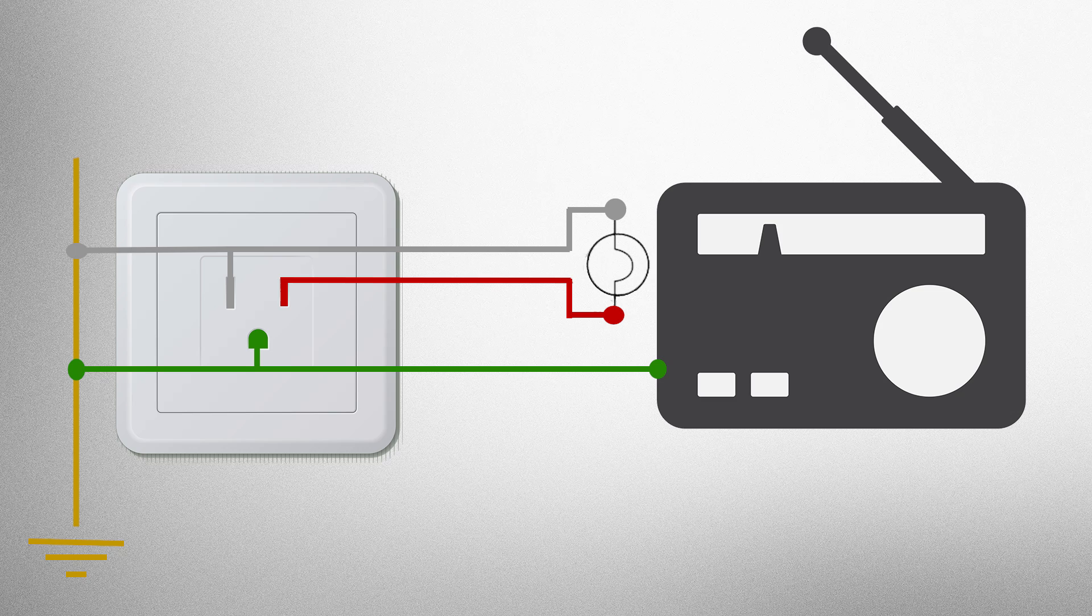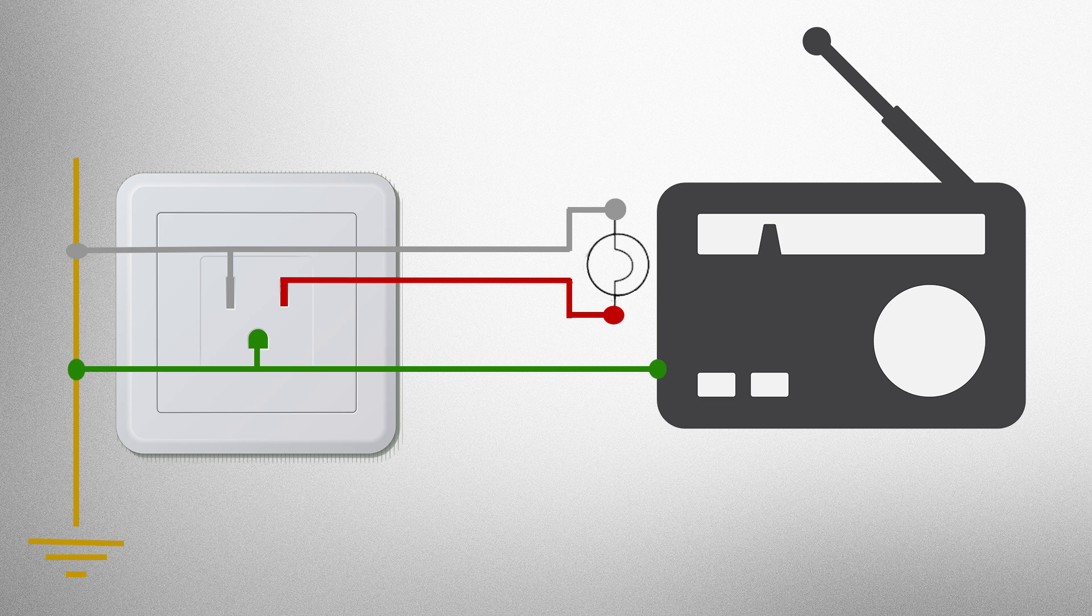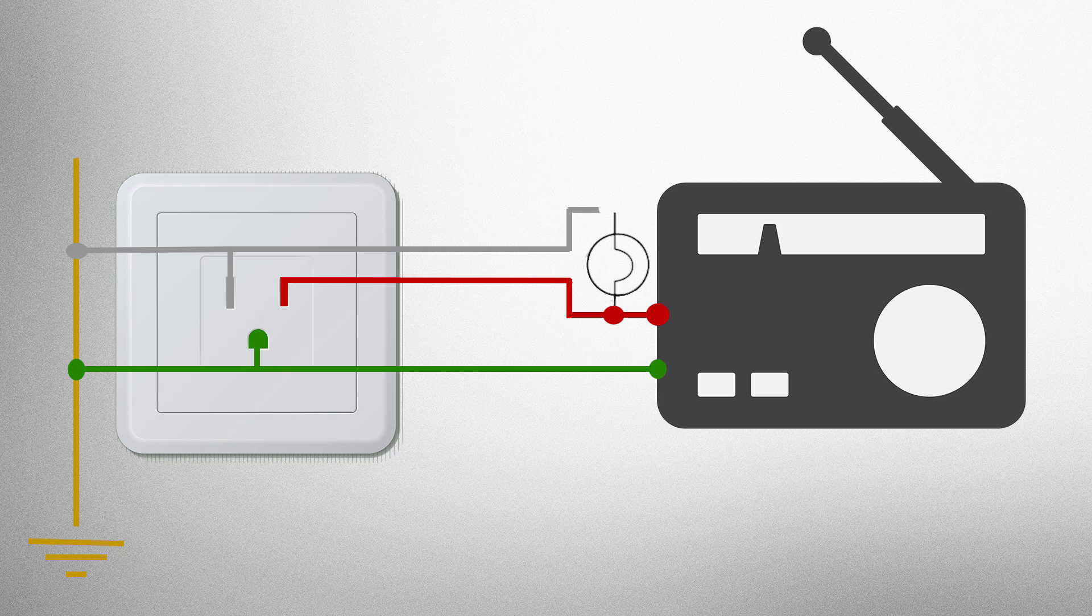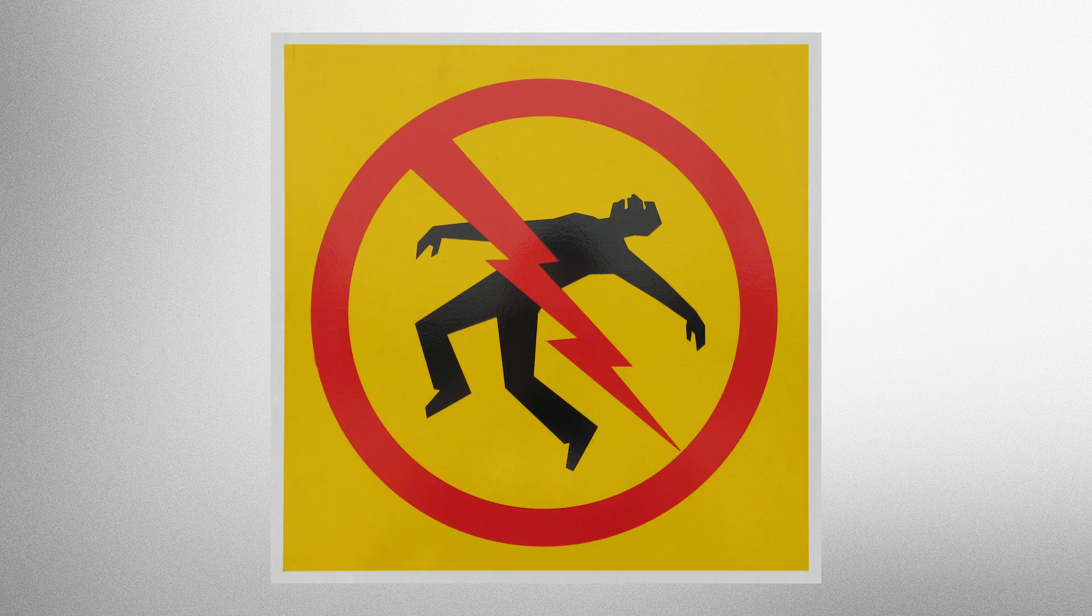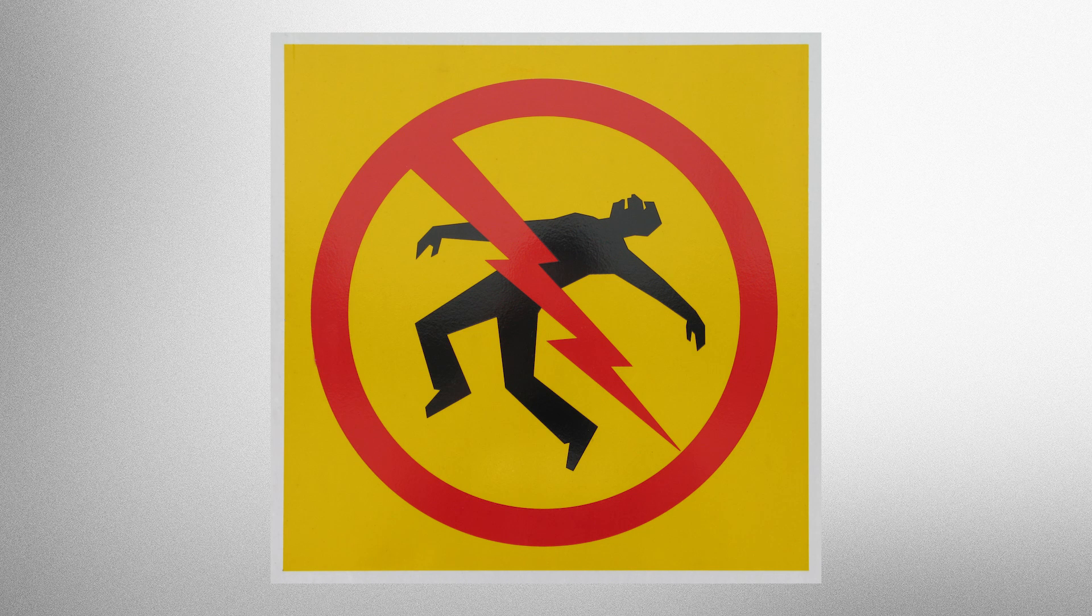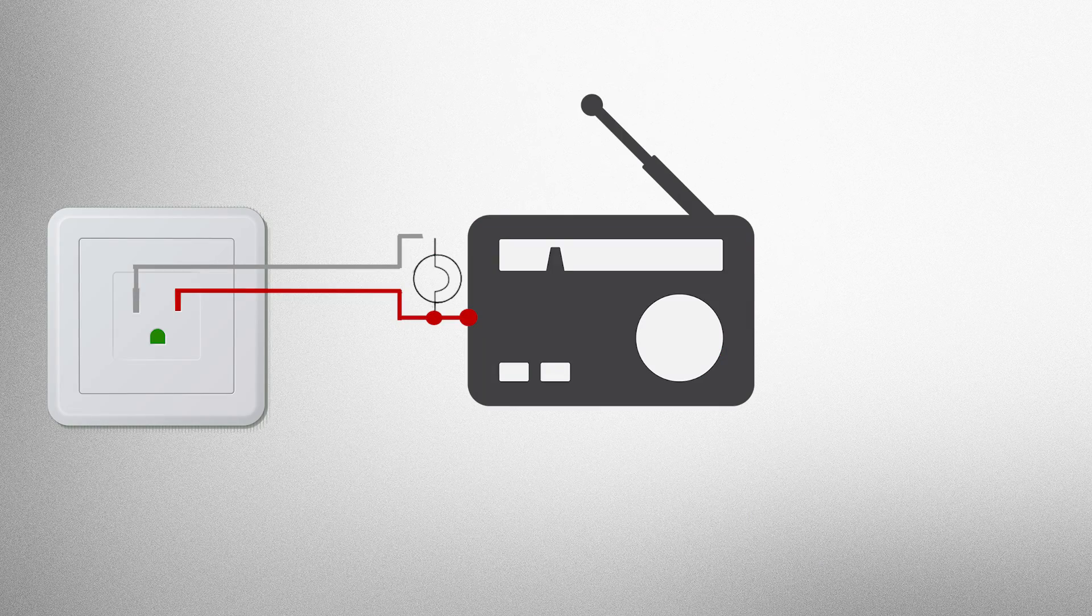So why have both a neutral and a ground when they both ultimately just tie to the earth ground bar in the main breaker box? Among a few other benefits, this is primarily so that if something should go awry with the device, like a stray hot or neutral wire coming into contact with the outer conductive parts of the device, for instance if the insulation wears away or wire comes loose, you don't die or seriously get injured if you touch the device and it's plugged in.